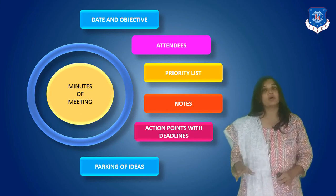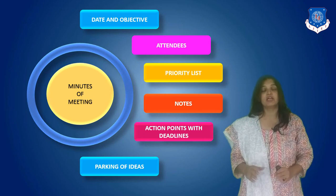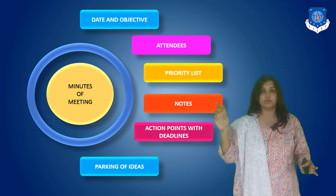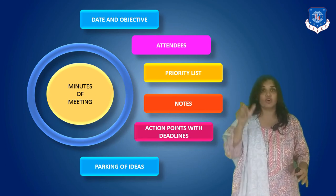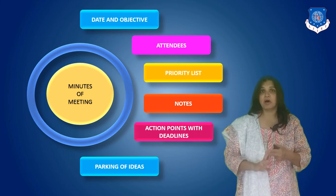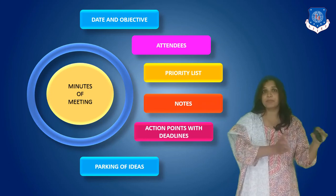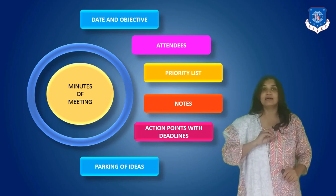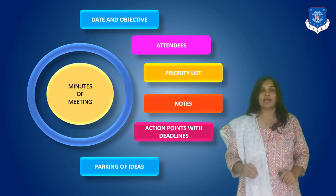To make this simple, the person writing the minutes of meeting should carry a diary and divide the page into different parts. You already know the date, objective, and attendees before the meeting starts. The moment the meeting begins, write down the attendees and priority list. Then divide the remaining page into three separate parts for notes, action points, and parking of ideas — these three will happen while the meeting is going on. This will help you in clear and effective writing of your minutes of meeting.